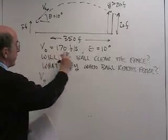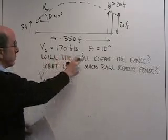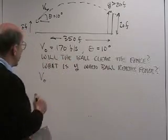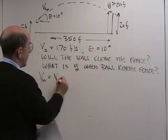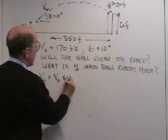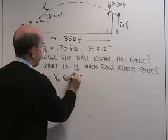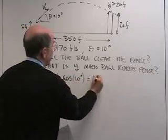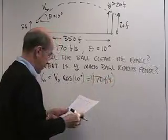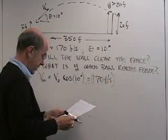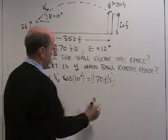v0 is equal to 170 feet per second. We've got the angle so that we can say vx0 is equal to v0 times the cosine of 10 degrees. So that's equal to 170 feet per second, cosine of 10 degrees is 0.985.